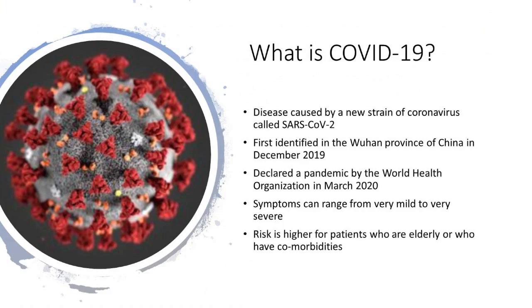Briefly, COVID-19 is a disease caused by a new strain of coronavirus called SARS-CoV-2, first identified in Wuhan, China in December 2019. Since that time, this virus has spread throughout the world, and a global pandemic was declared by the World Health Organization in March 2020. There is a broad range of symptoms, from asymptomatic carriage all the way through death. Like most respiratory illnesses, the risk seems greatest for patients who are elderly and for those with comorbidities.